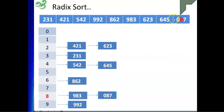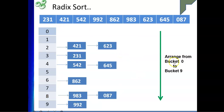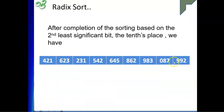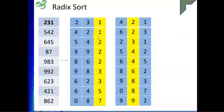Continuing the second pass: 645 goes into bucket 4 after 542, and 087 goes into bucket 8 after 983. Reading from bucket 0 to 9, we get: 421, 623, 231, 542, 645, 862, 087, 983, 992. This is the result after sorting by the second digit, and it becomes our input for the final pass.